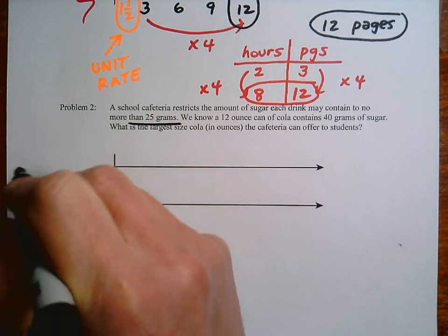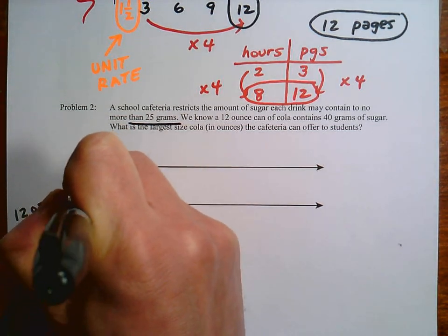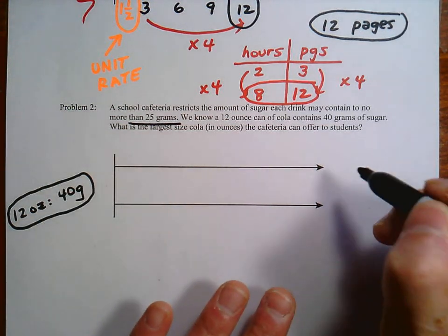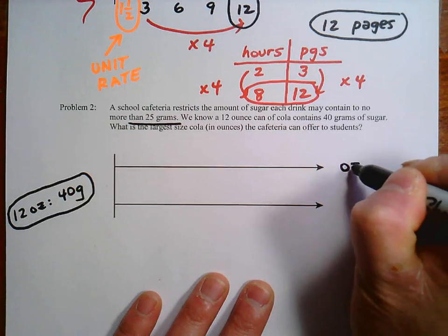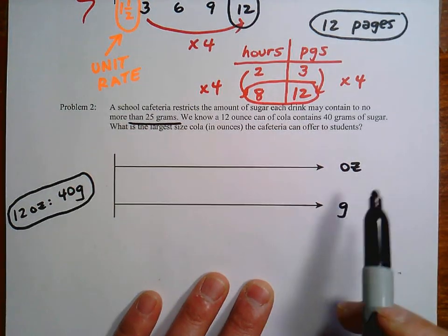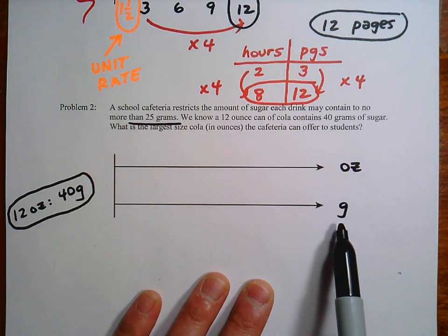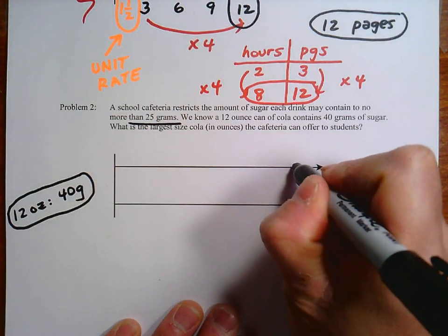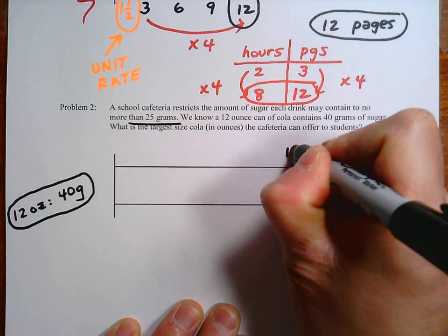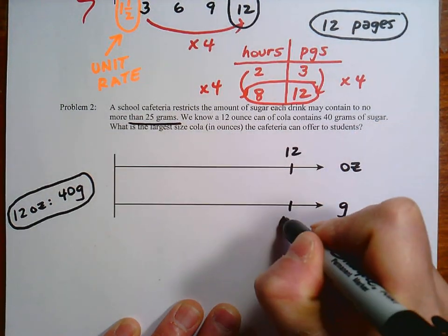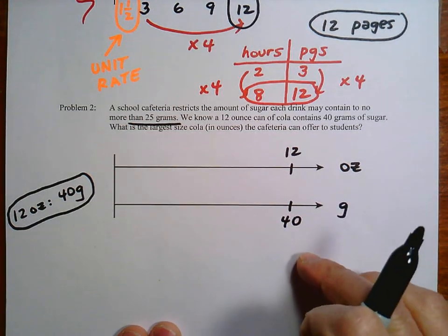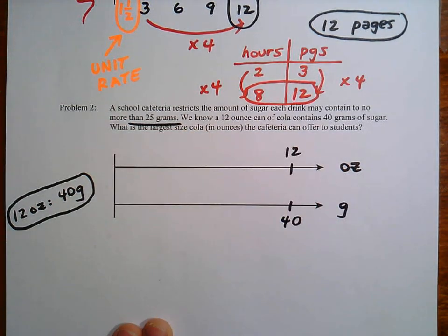So I'll write the main ratio maybe right over here. So we have 12 ounces, 40 grams. That's our main ratio here. So it doesn't matter which line you use for what. I'm going to use ounces of cola and then the grams of sugar there. And then the info we have, I'm going to put 12 here and 40 there. Notice in this problem, I chose to put these way over here because the answer is going to be somewhere over here.